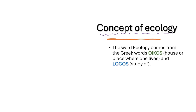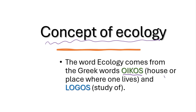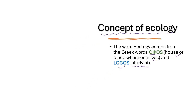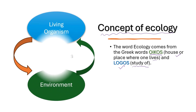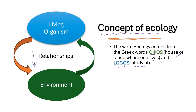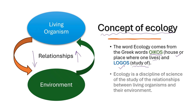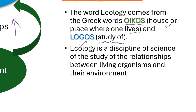Let us understand the concept of ecology. The word ecology comes from the Greek words: 'okos', meaning house or place where one lives, and 'logos', meaning study of. So, it can be summarized as the study of the house in which we live. Ecology can be defined more specifically as the study of the interactions between organisms and the non-living components of their environment — a discipline of science studying the relationships between living organisms and their environment.